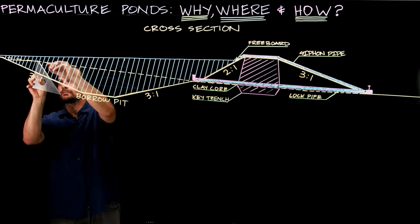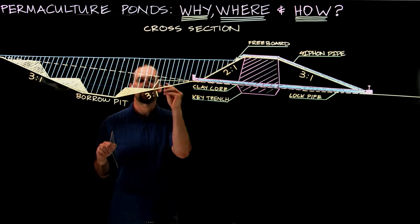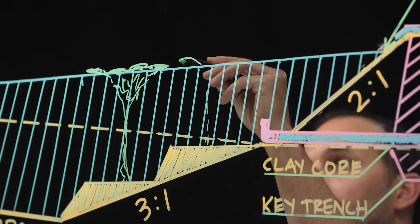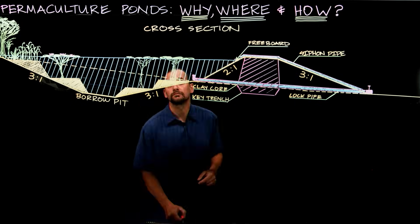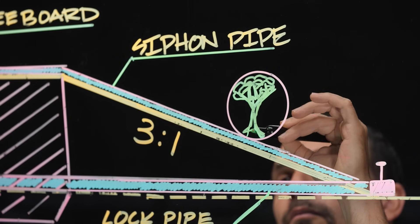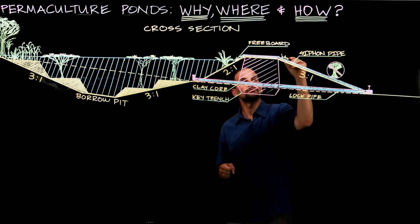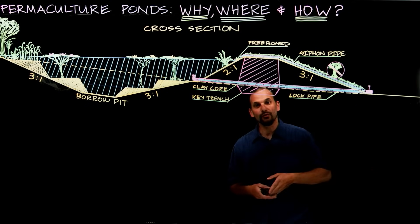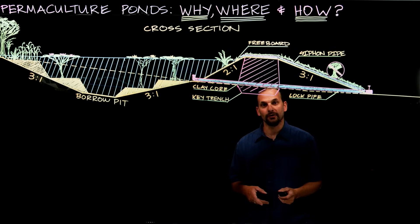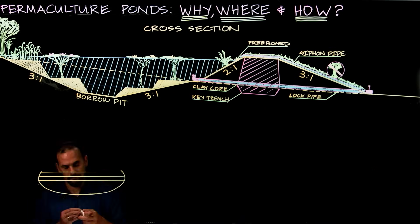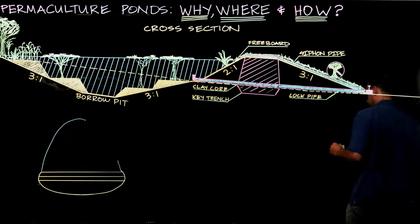So these are the bones of the pond. But how can we make this whole system more dynamic? So we can do all sorts of design to create plant niches, different levels, put trees on the edge. The dam itself can even be planted, but not with trees or woody perennials, because a tree's roots can work their way through the pond and create pathways for water to leak through.